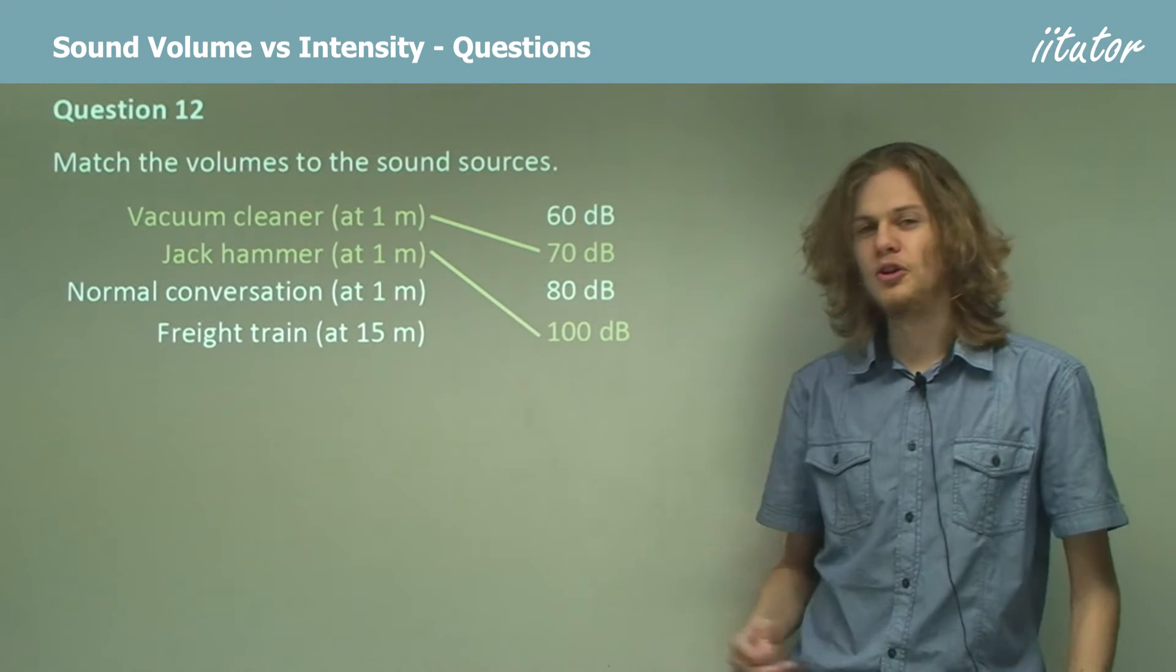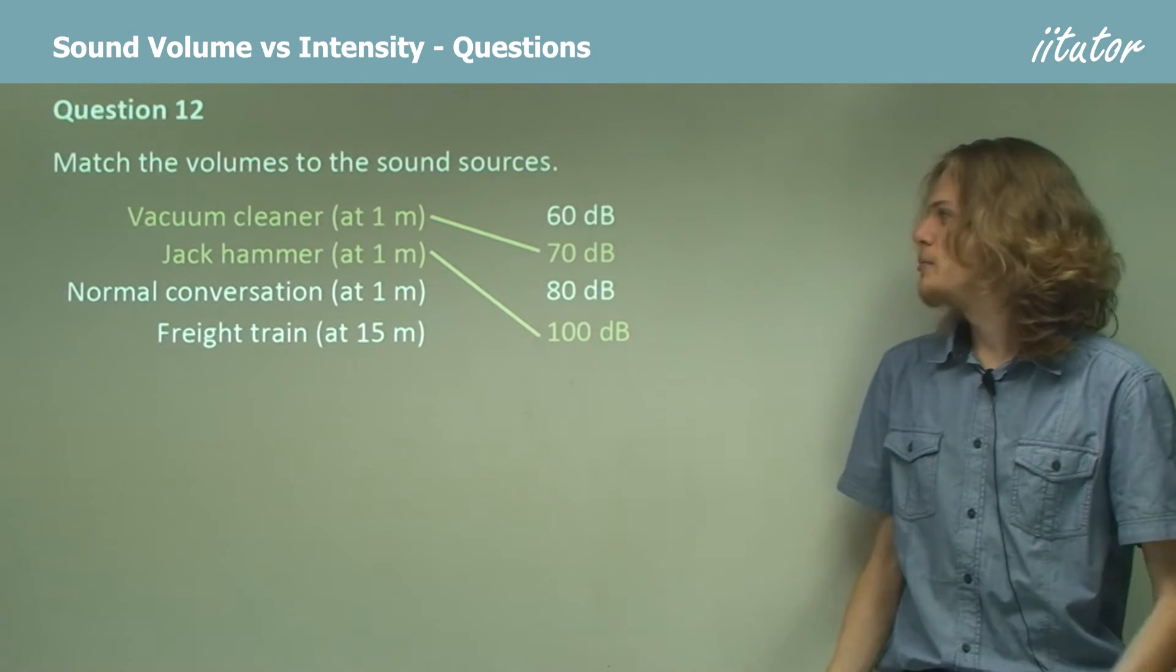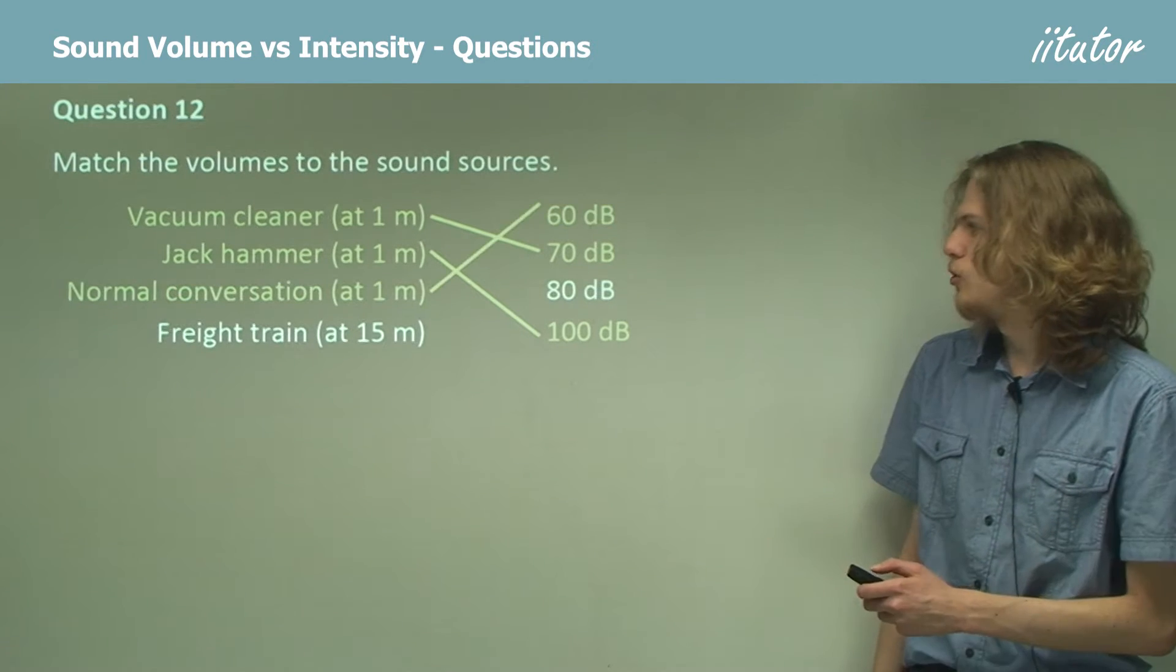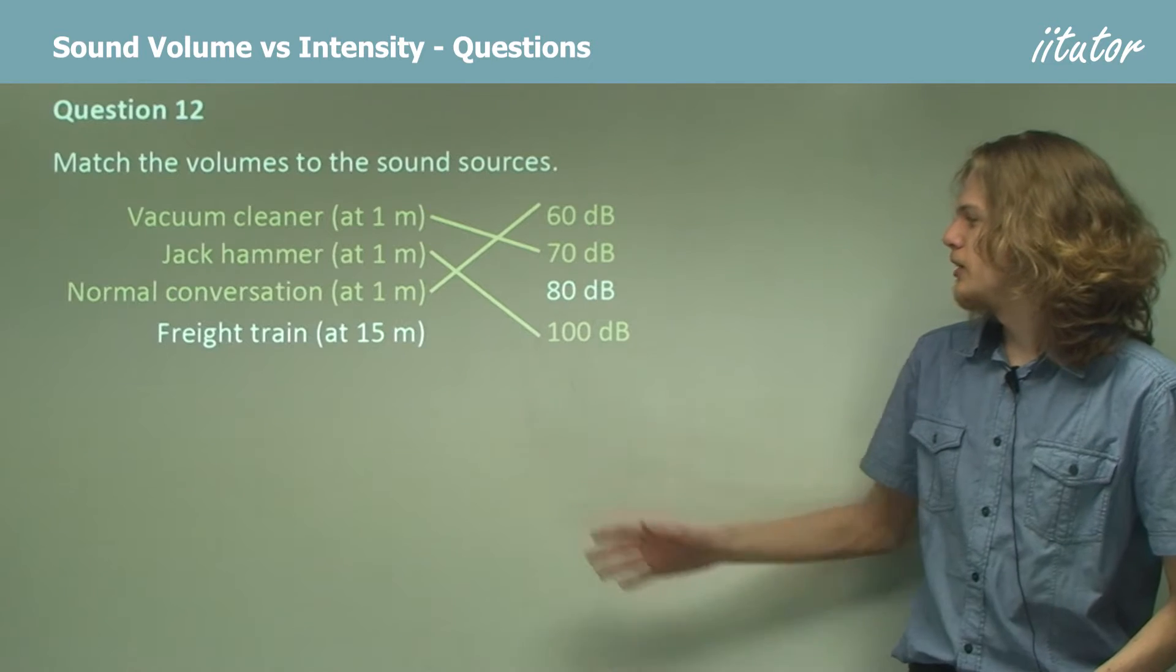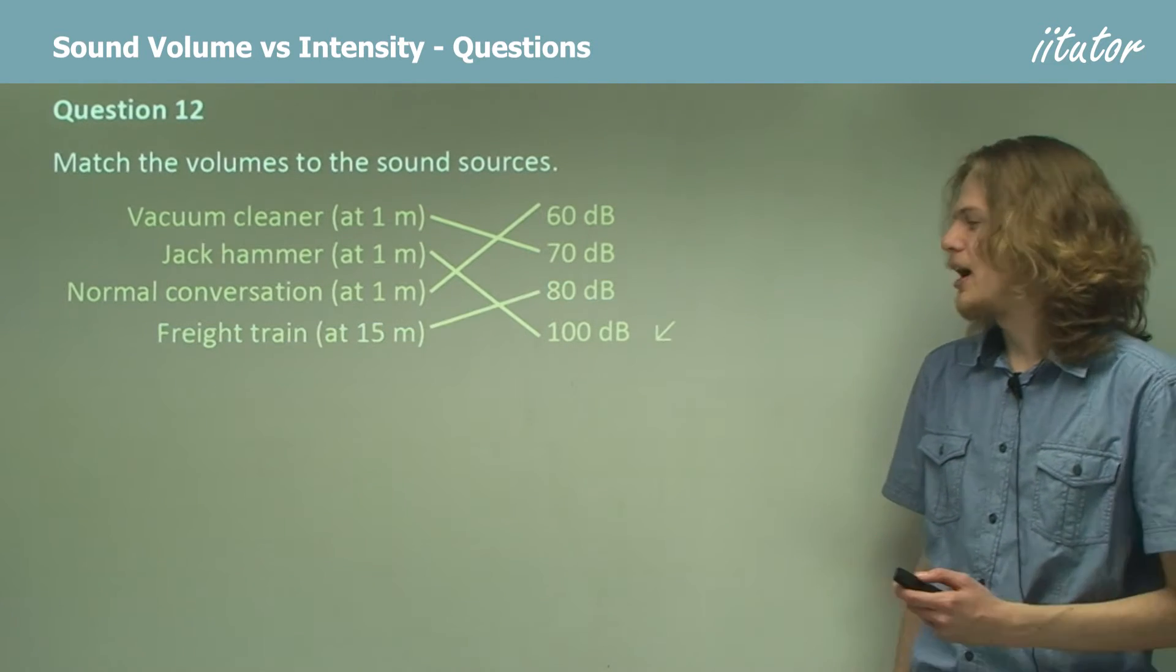Normal conversation is going to be the softest of these. It tends to be at about 60 decibels. Although of course that may vary depending on how loud you talk. And finally, the freight train will be left with 80 decibels.